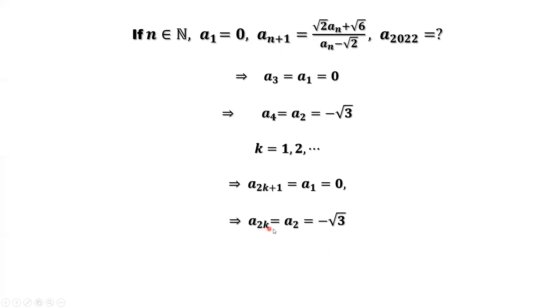So here, 2K, K equals one, equals two. We know that A2 equals negative square root of three. How about A4? K equals two, that's A4, also equals A2 equals negative square root of three. In summary, if the index number is an odd number, this number should be zero. If the index number is an even number, this number should be negative square root of three.